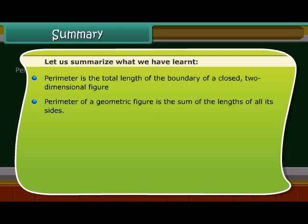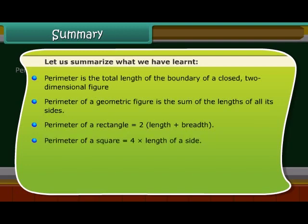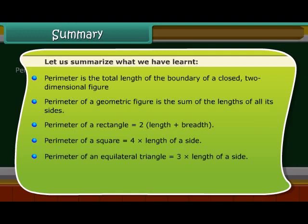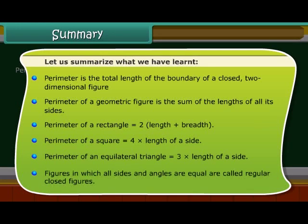To summarize: the perimeter of a geometric figure is the sum of the lengths of all its sides. The perimeter of a rectangle is equal to 2 into (length plus breadth). The perimeter of a square is equal to 4 into the length of a side. The perimeter of an equilateral triangle is equal to 3 into the length of a side. Figures in which all sides and angles are equal are called regular closed figures. Thank you.